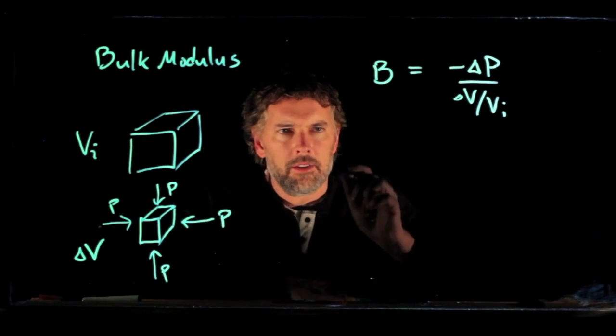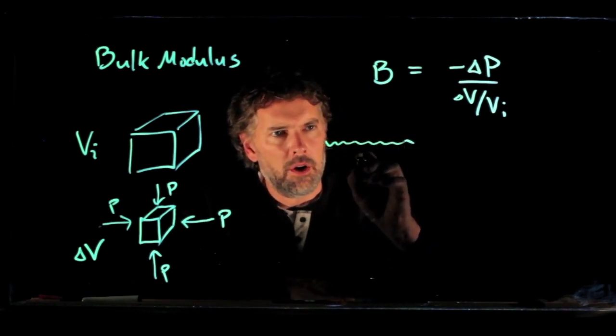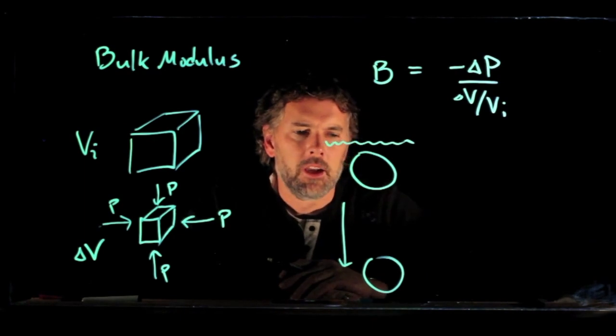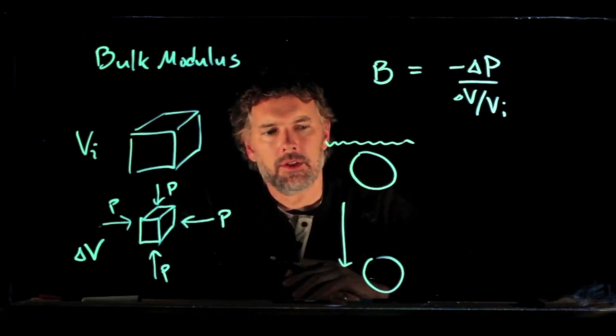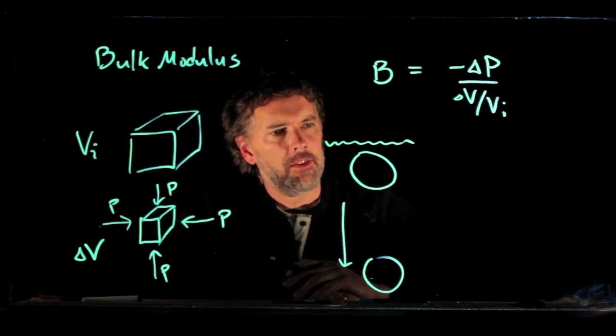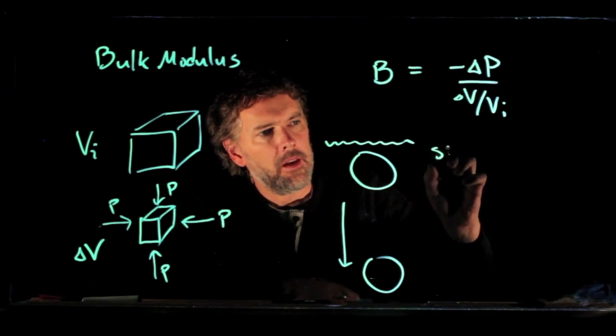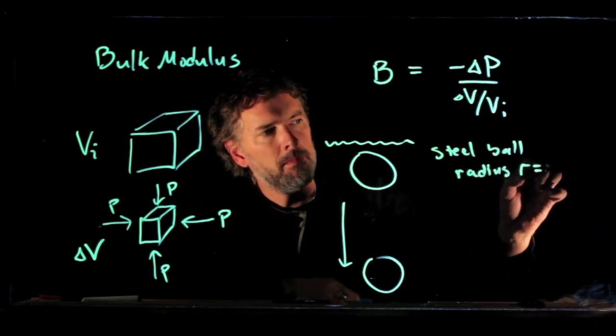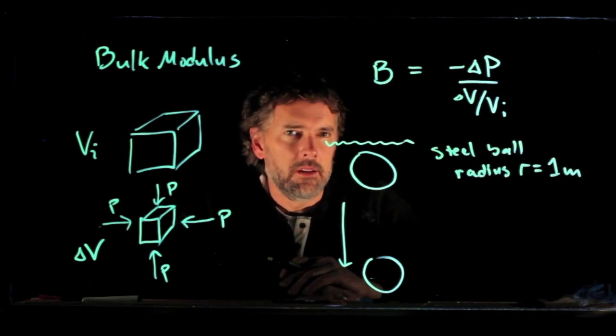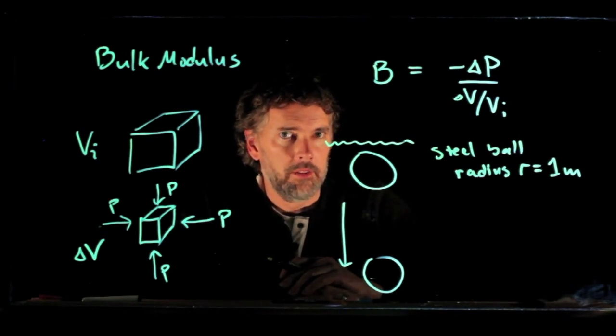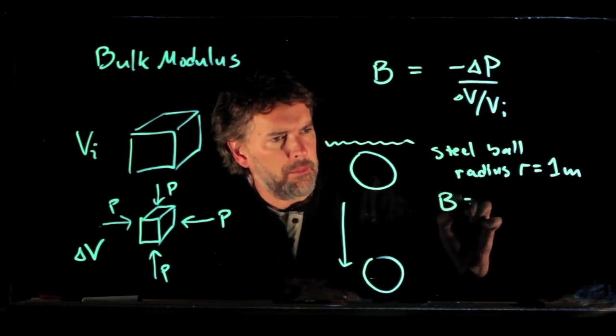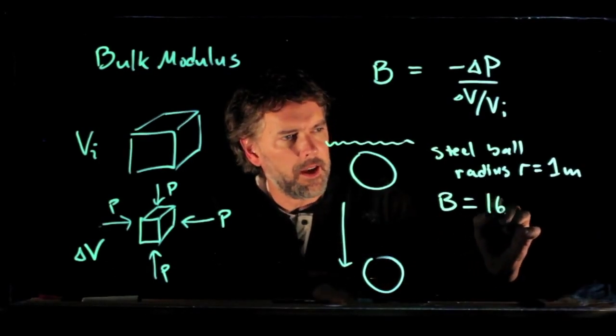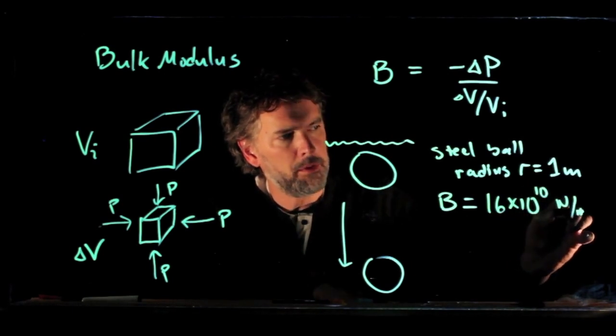So let's say we examine the case where we take a solid ball of steel and we take it down to the bottom of the ocean. Okay, and let's see if we can calculate how much that steel ball shrinks. And let's say that the radius of the ball has a value of one meter. And we need to know the bulk modulus of steel. And if you look that up in the book, the bulk modulus of steel is the following: it is 16 times 10 to the 10 newtons per square meter.